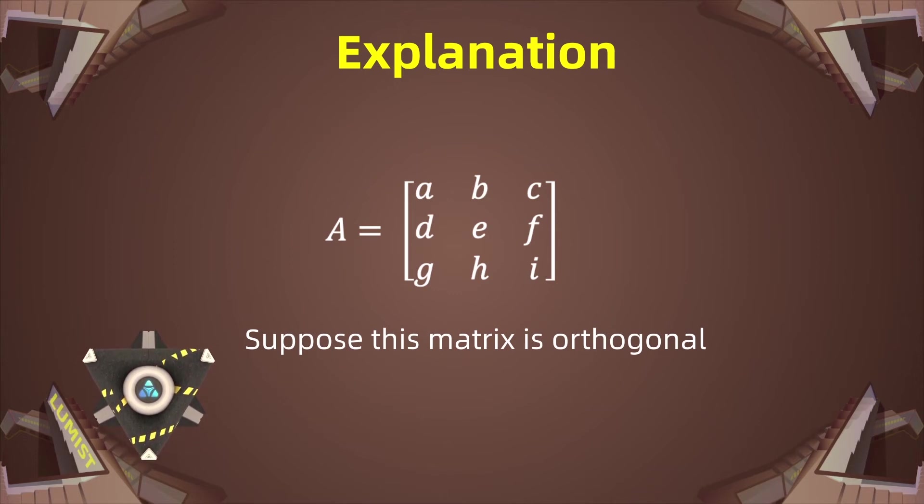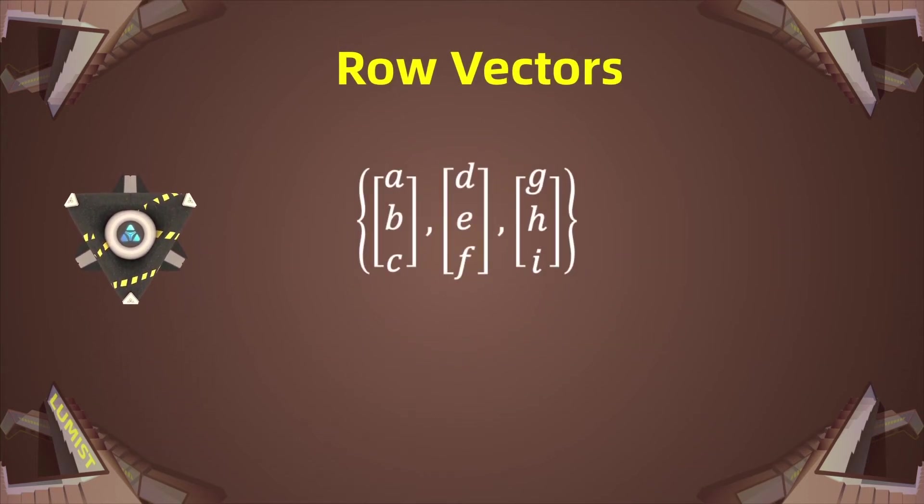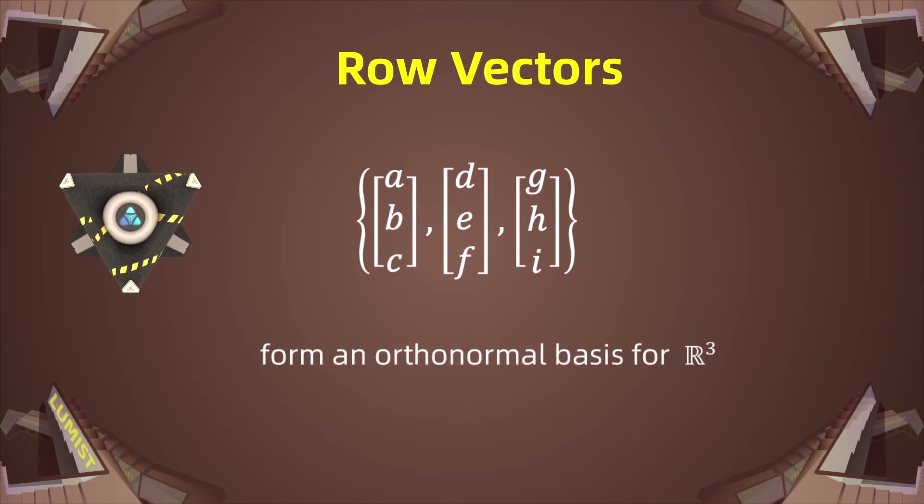Suppose this matrix is orthogonal. Then the previous result also tells us that the rows of A form an orthonormal basis for R3. That is to say the set whose vectors are A, B, C, and then D, E, F, and G, H, I form an orthonormal basis for R3.